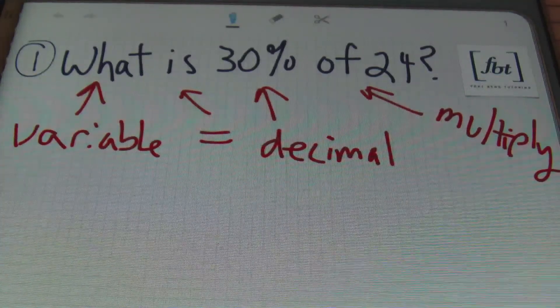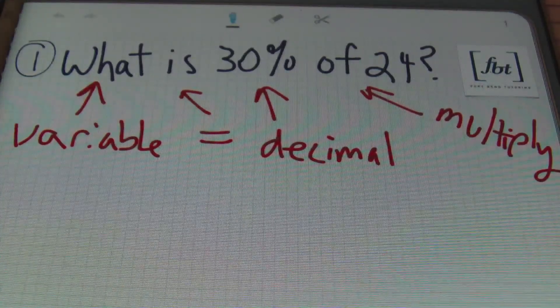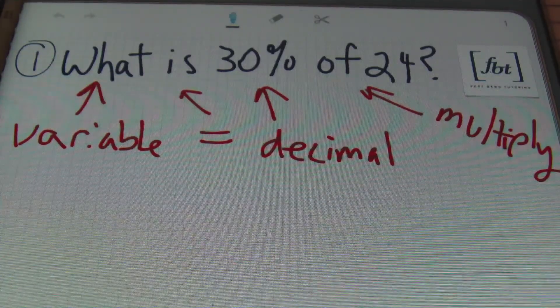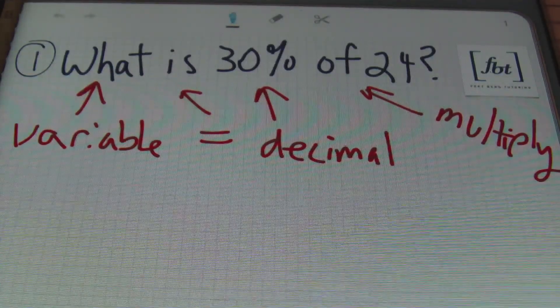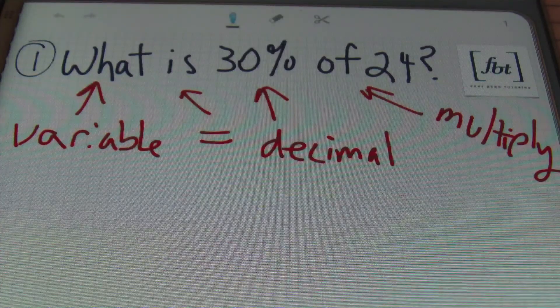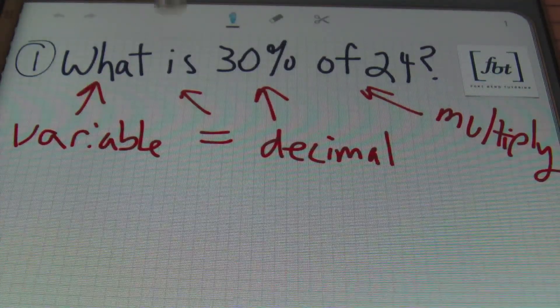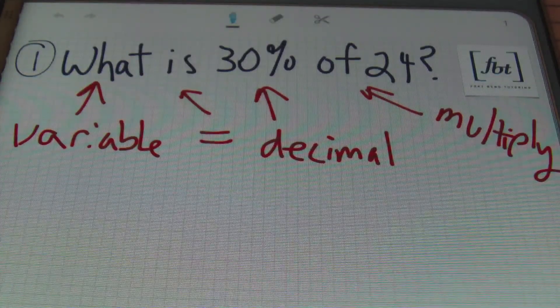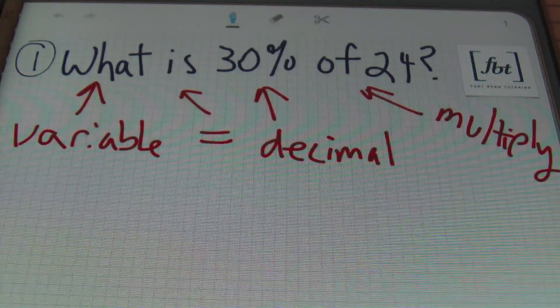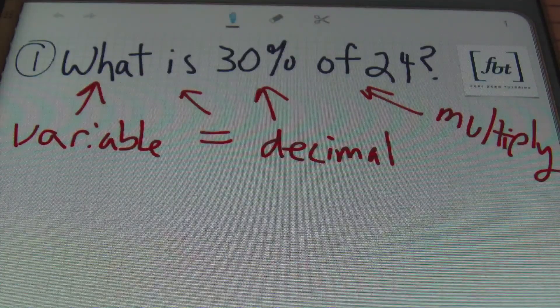So here we are, ladies and gentlemen. Problem number one: What is 30% of 24? If you want to translate this into an algebraic equation, what you need to know is the following. The word 'what' is always your variable. The word 'is' is always the equal sign.